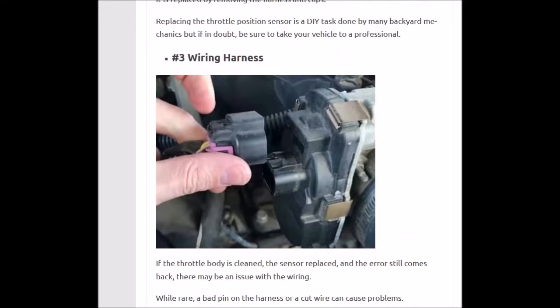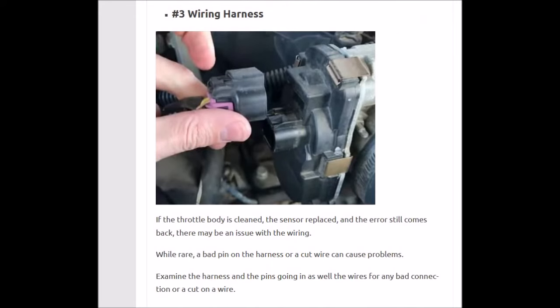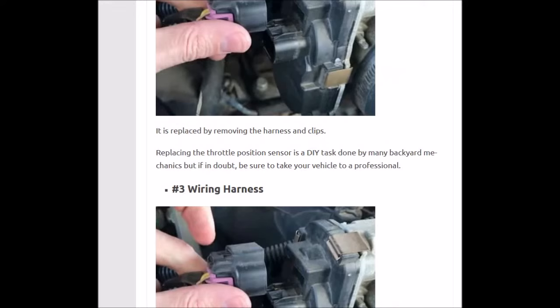Number three is the wiring harness going to the throttle position sensor. You can check all your connections, make sure it's seated in there good — take it off, reseat it, make sure it's on there. It could possibly even be an open or cut farther down the line going all the way back to the ECM, which is rare but does happen. So check out your wiring harness and be sure it's got a good connection going to that throttle position sensor on the throttle body.